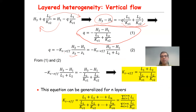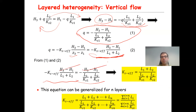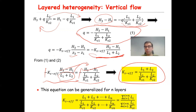Equating equation 1 and equation 2, we set −Ks_eff × (H3 − H1)/(L1 + L2) equal to the right-hand side of equation 1. The (H3 − H1) and minus sign cancel out, giving: Ks_eff = (L1 + L2) / (L1/Ks1 + L2/Ks2). This is the formula to calculate the effective saturated hydraulic conductivity of a two-layered porous medium when flow is vertical, i.e., perpendicular to the layering structure.